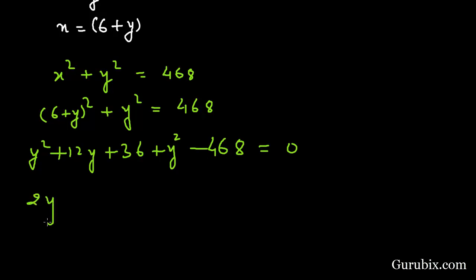So this equals 2y square plus 12y minus 432 equals 0. We got 432 when we subtracted 36 from 468.